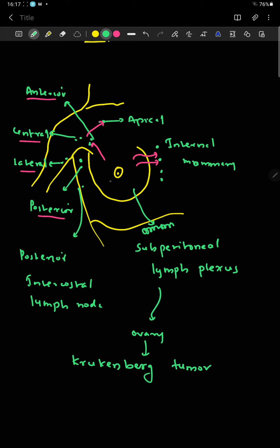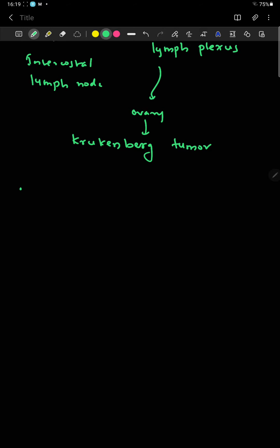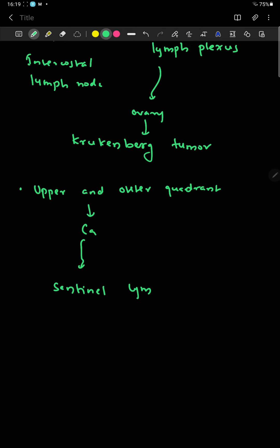Lymph from the lower lateral part drains into the posterior intercostal lymph nodes. The upper and outer quadrant of the breast is a frequent site of carcinomas. The first lymph node or group of lymph nodes draining a tumor-bearing area is called the sentinel lymph node.